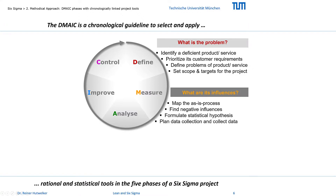After defining the problems, we look for their triggering causes in the measure phase. To identify these negative influences on the problem, the as-is process is mapped and inspected first.